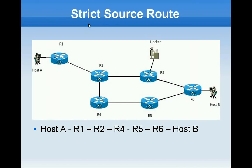The other option in source routing is strict source routing. Strict source routing forces the packet to traverse the network one hop at a time without passing through any intermediate nodes. For example, the route R1, R2, R4 means that the packet will have to go through R1, then R2, then R4 without traversing any intermediate nodes. For example, if we remove R2 from this path R1, R4, the packet cannot go directly from R1 to R4 without traversing any intermediate nodes which are R2. So the packet would be dropped at R1.